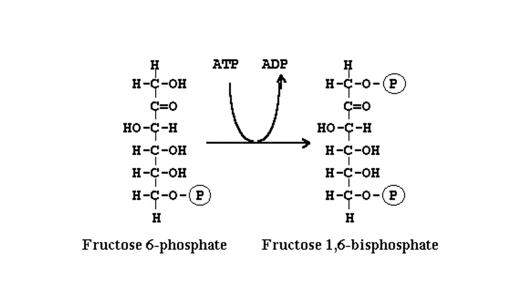Fructose 6-phosphate is converted to fructose 1,6-bisphosphate. When two phosphate groups are attached to the same carbon, it is called diphosphate; when the two phosphate groups are attached to different carbons, it is called bisphosphate. This reaction takes place in glycolysis — the breakdown of sugar/glucose. In the glycolytic pathway, fructose 6-phosphate is converted to fructose 1,6-bisphosphate.